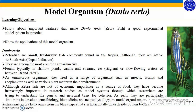As omnivorous organisms, they feed on a range of organisms such as insects, worms, and zooplanktons, as well as various plant matters in the environment. Although zebrafish are not of economic importance as a source of food, they have become increasingly important in research studies as a model system, as researchers are trying to understand the genetic and neuronal basis for behavior. As such, they are particularly important in developmental biology, biomedicine, and neurophysiology experiments.